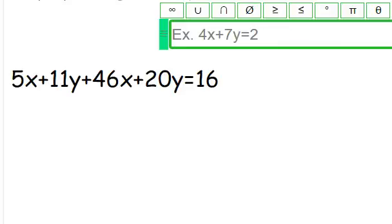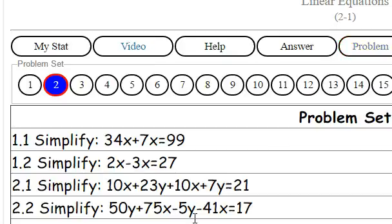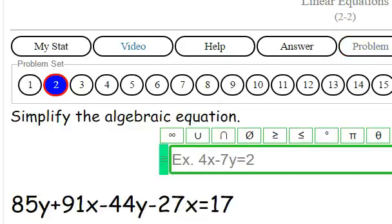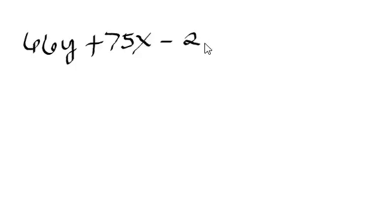Problem 2-2. Once again we are simplifying linear equations. So this one here reads 66Y plus 75X minus 26Y minus 13X equals 39.